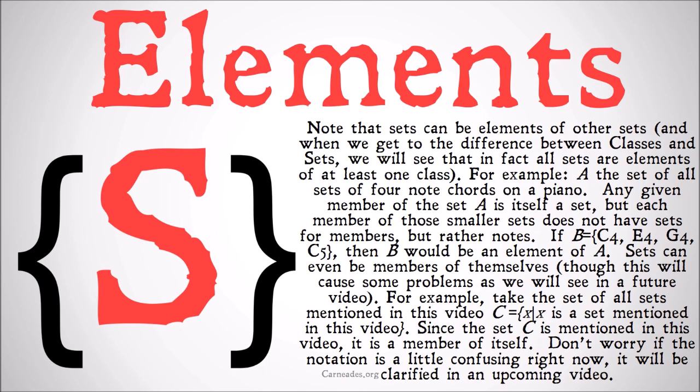Sets can even be members of themselves. If what I just said doesn't make sense, we're going to look in more depth at this idea of how sets are members of themselves, and when you have telescoping sets — a set of a set of a set — why the biggest set doesn't have all of those inside sets as members, just the one that's directly inside it. We'll look at that in more depth soon. Sets can be members of themselves, though this is going to cause problems as we'll see in a future video, but they can be.